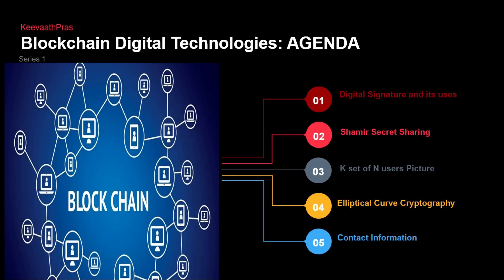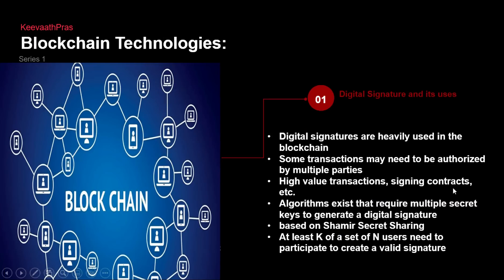Why are we talking about digital signatures right now? We have also covered this in my previous blockchain lectures, but in this particular lecture we will be knowing a little bit more in-depth about the digital signature — why it is important, how it is actually used, and why we say that digital signatures are tamper-proof for authentication and authorization. So we will be seeing digital signatures, Shamir Secret Sharing, k-of-n users, and elliptic curve cryptography.